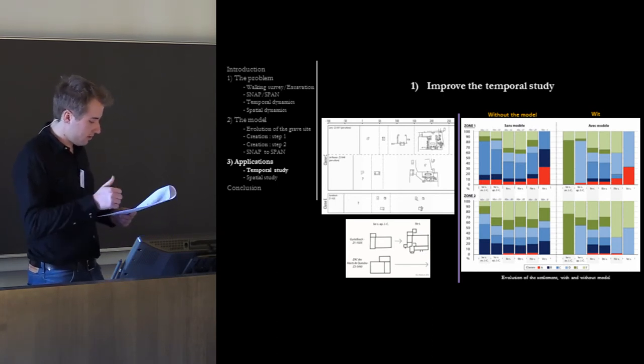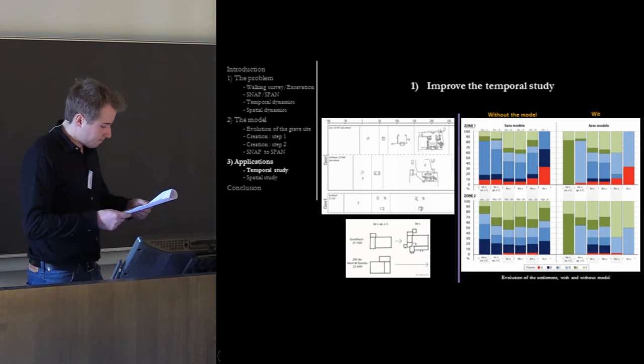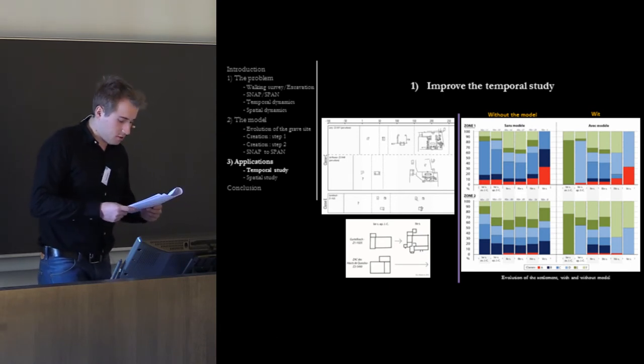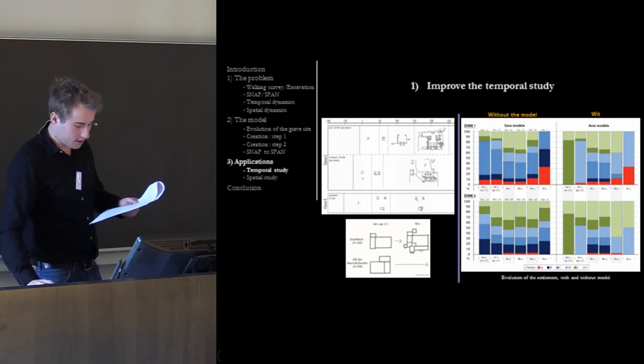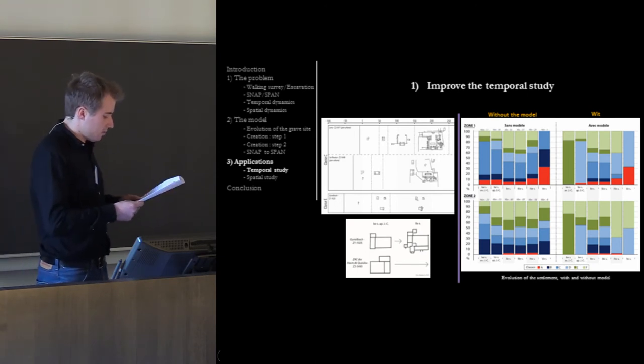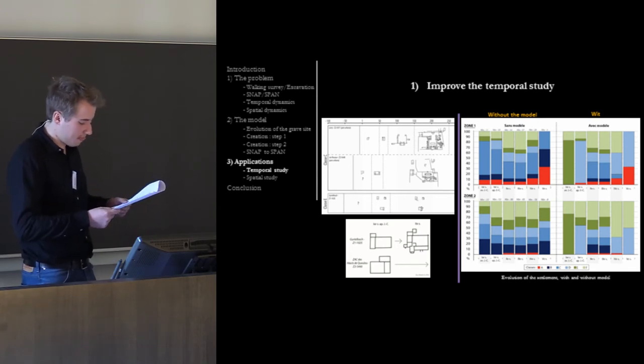Otherwise, the application of the model makes it possible to visualize the evolution of the settlement composition in quite another way. On the left, you can see the evolution using the model. Over the centuries, the composition of the population is often the same. The approach does not add much to understanding the dynamic of settlement. To the right, with the use of the model, we see a completely different picture of the evolution of the settlement. In order to better understand the evolution, we wanted to measure and quantify the settlement diversity.